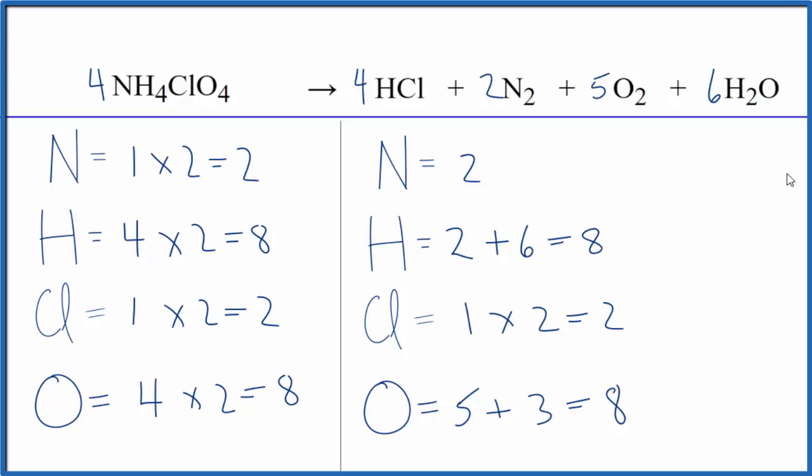If you wanted whole number coefficients, this is what you'd end up with: four, four, two, five, six. This is a very challenging equation to balance because first of all, you have to make sure you count the oxygens and the hydrogens up correctly. And then you get to this situation where you need to use a fraction to get the oxygens to balance out.